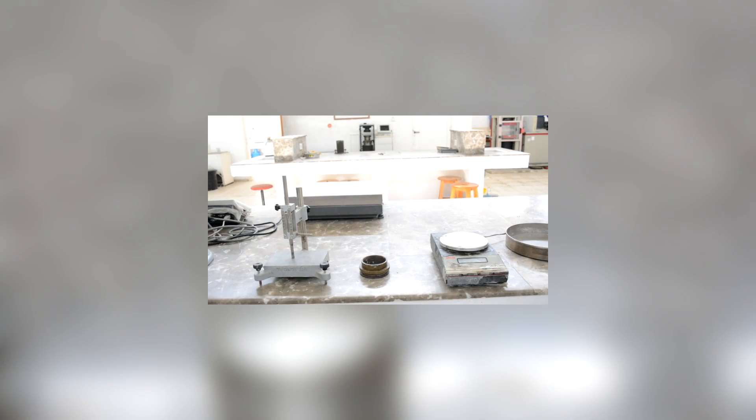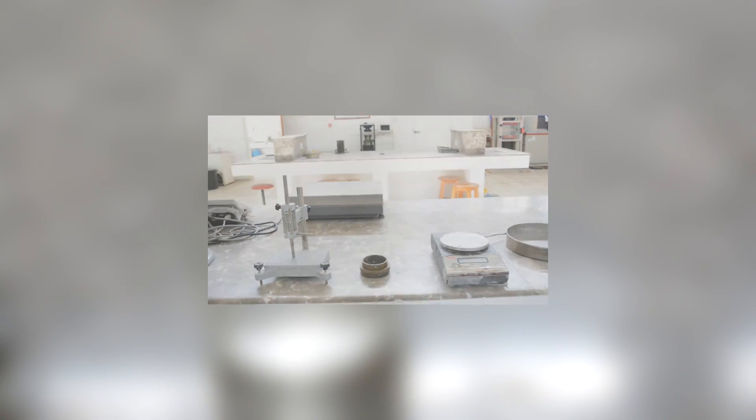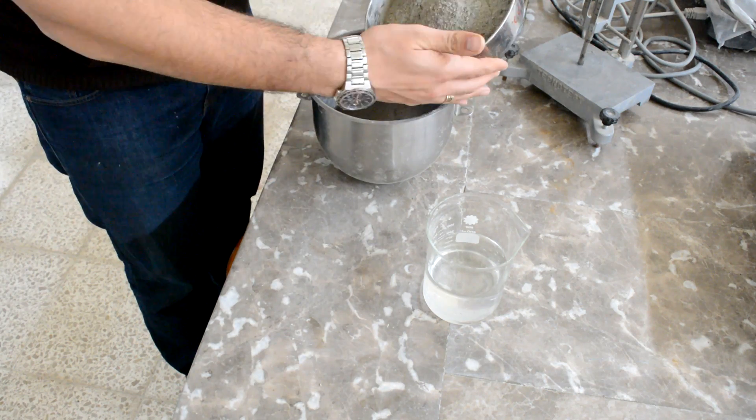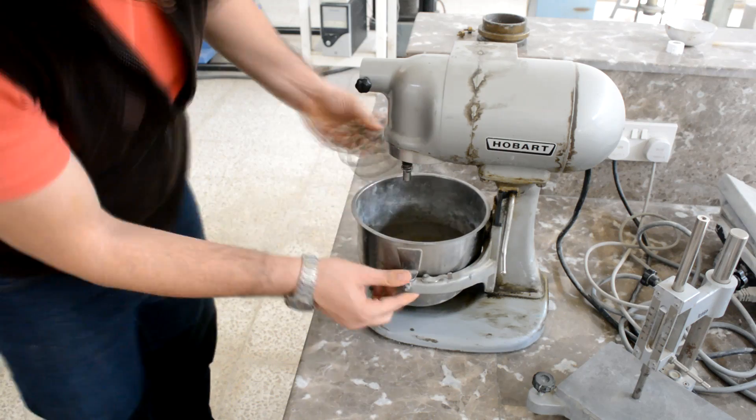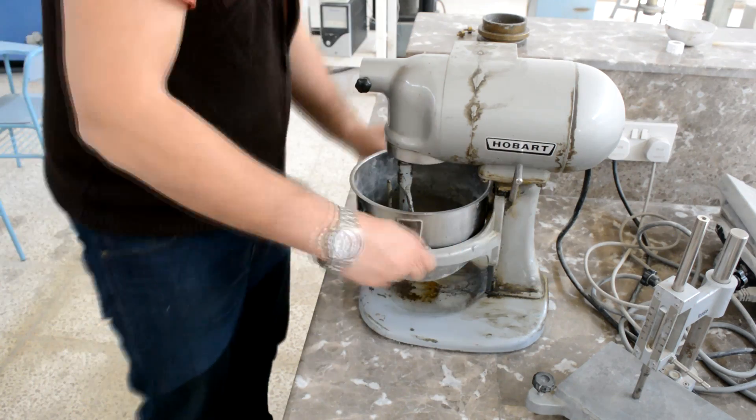Click here or on the link in the description box to see the video. First, put the cement in the mixing bowl, then add the water to the cement. Run your timer at the exact time you add the water to the cement. Prepare the cement paste as we have done in the normal consistency video, and leave your paste for 30 minutes.